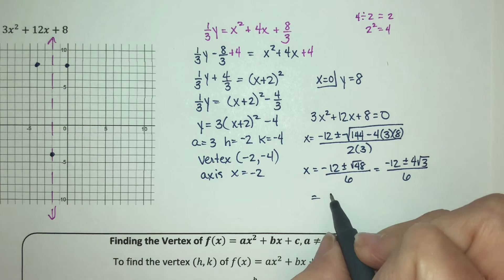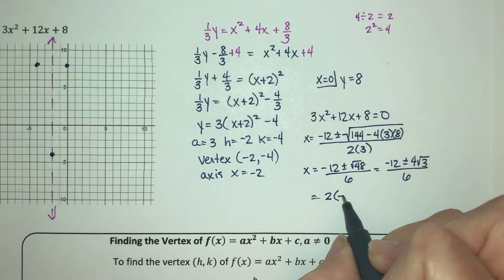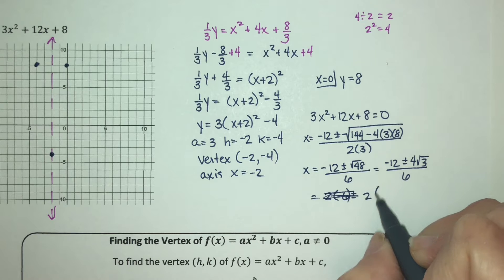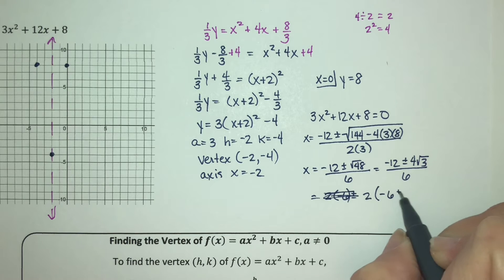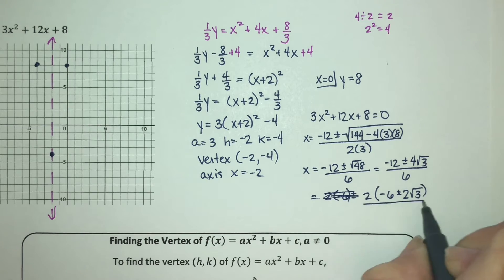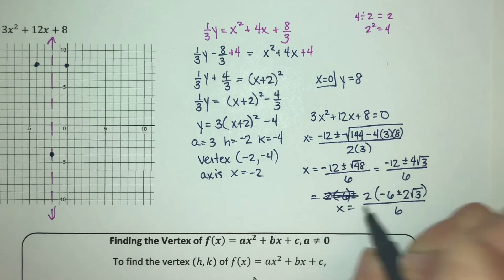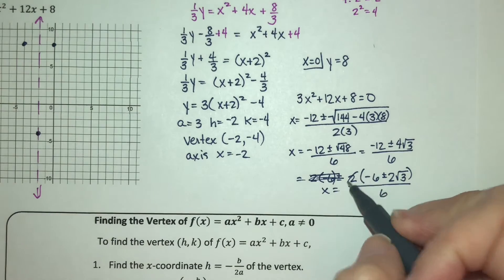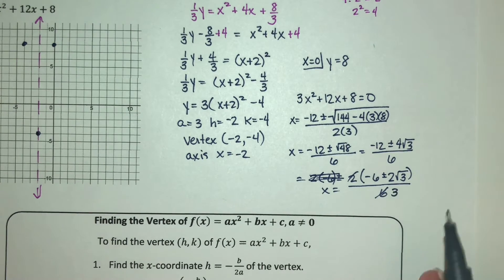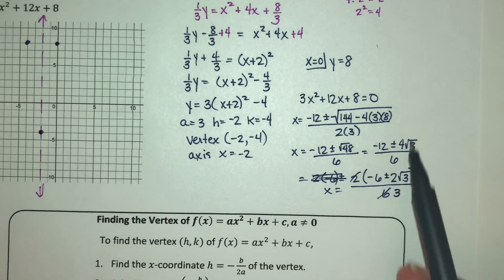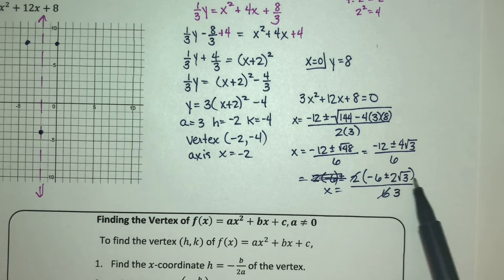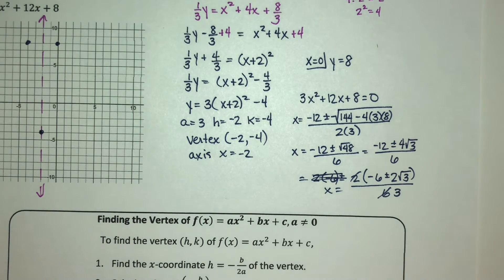The square root of 48 is 4√3 over 6. And now you can factor a 2 out of the top. Let's see if I can write it properly. And then the 2 and the 6 reduce to a 3. So your x-intercepts are -6 ± 2√3 divided by 3.